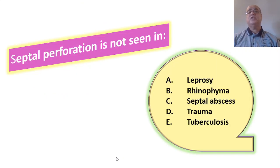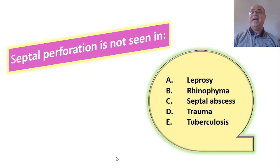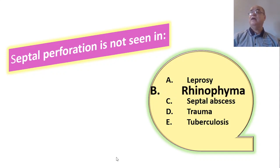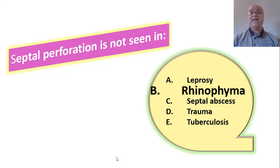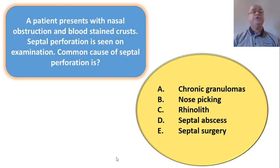Septal perforation is not seen in rhinophyma. Granulomatous diseases and trauma, especially surgical trauma, can cause septal perforation. However, rhinophyma is a benign tumor of the sebaceous glands present externally on the tip of the nose, so it will not cause septal perforation. The remaining four options in the question can all cause septal perforation.